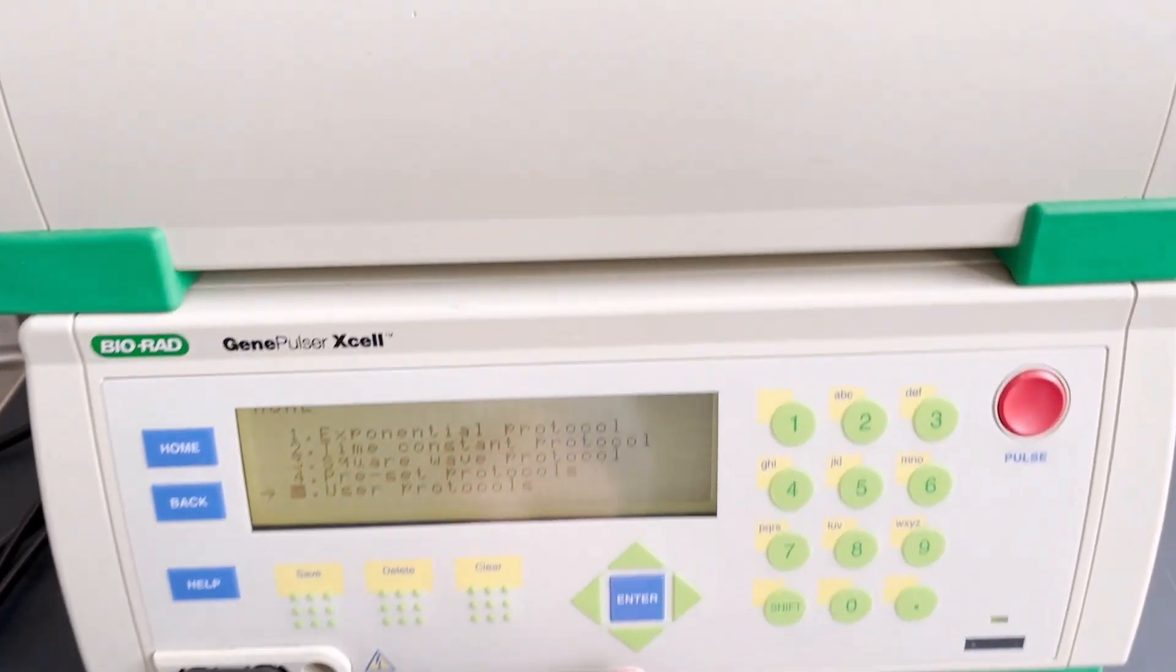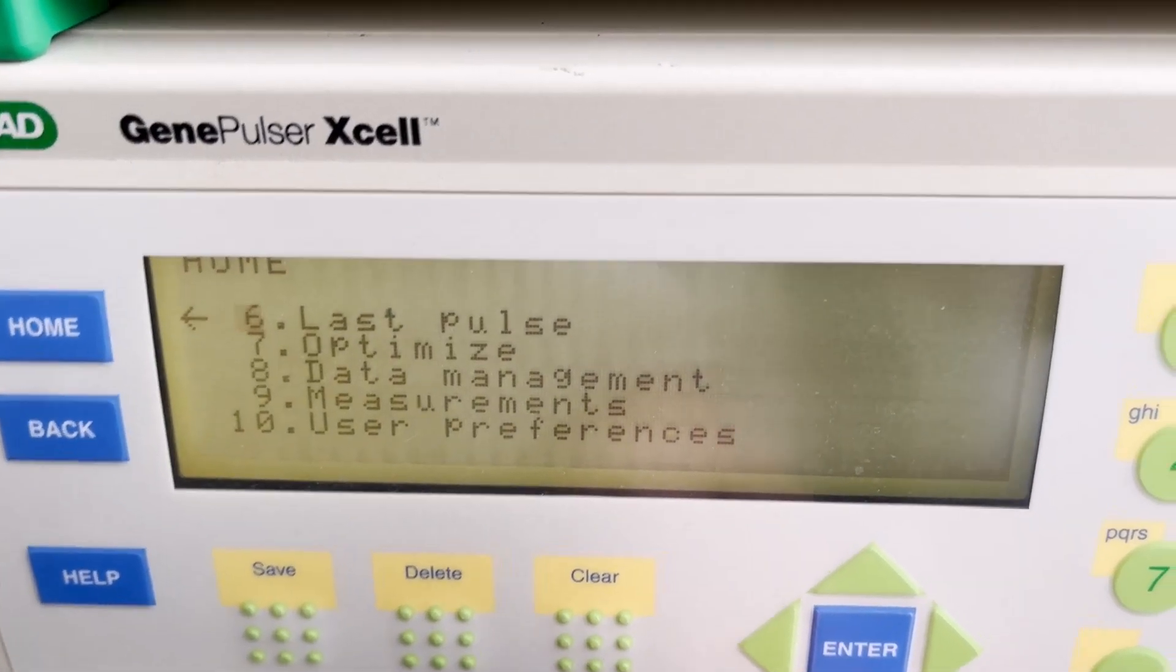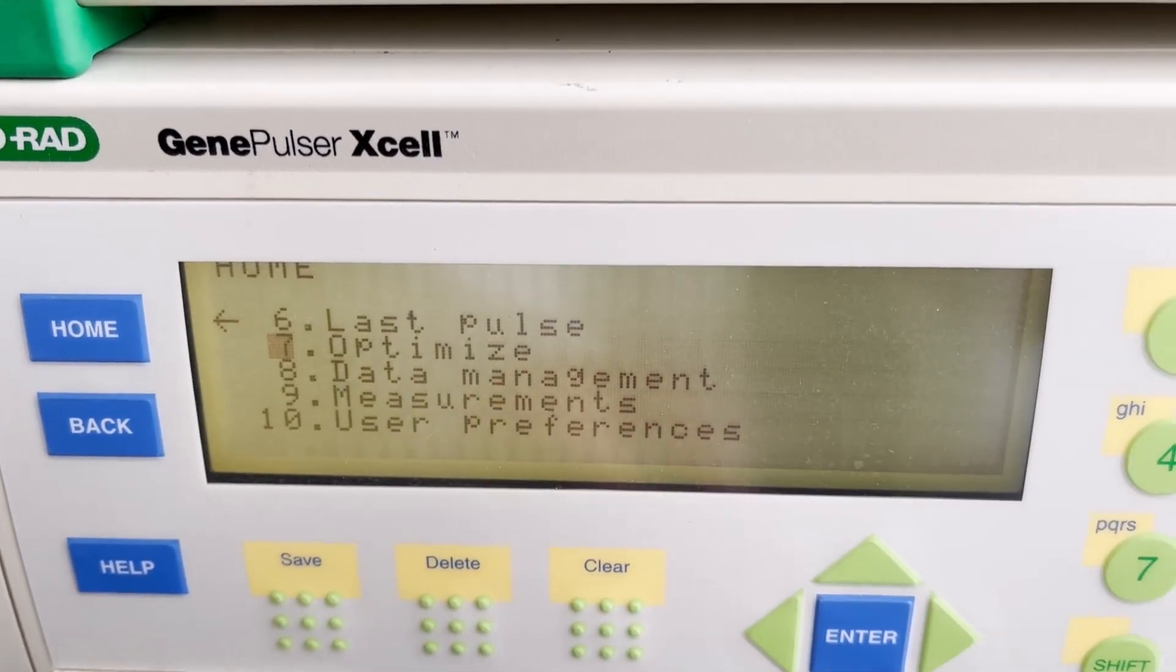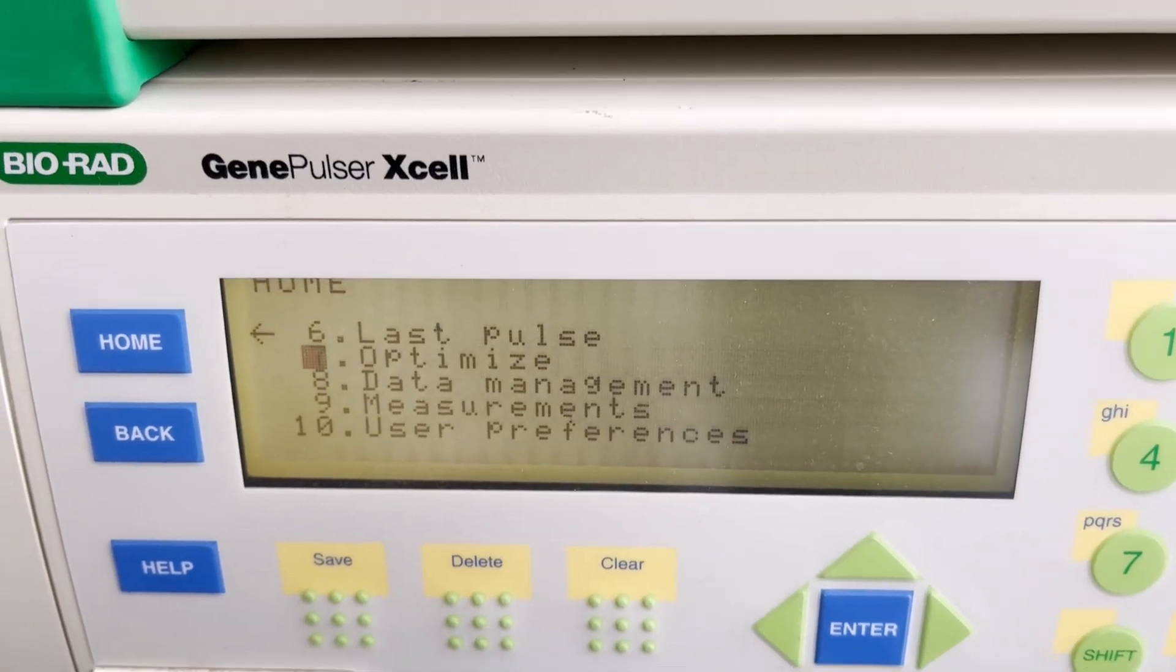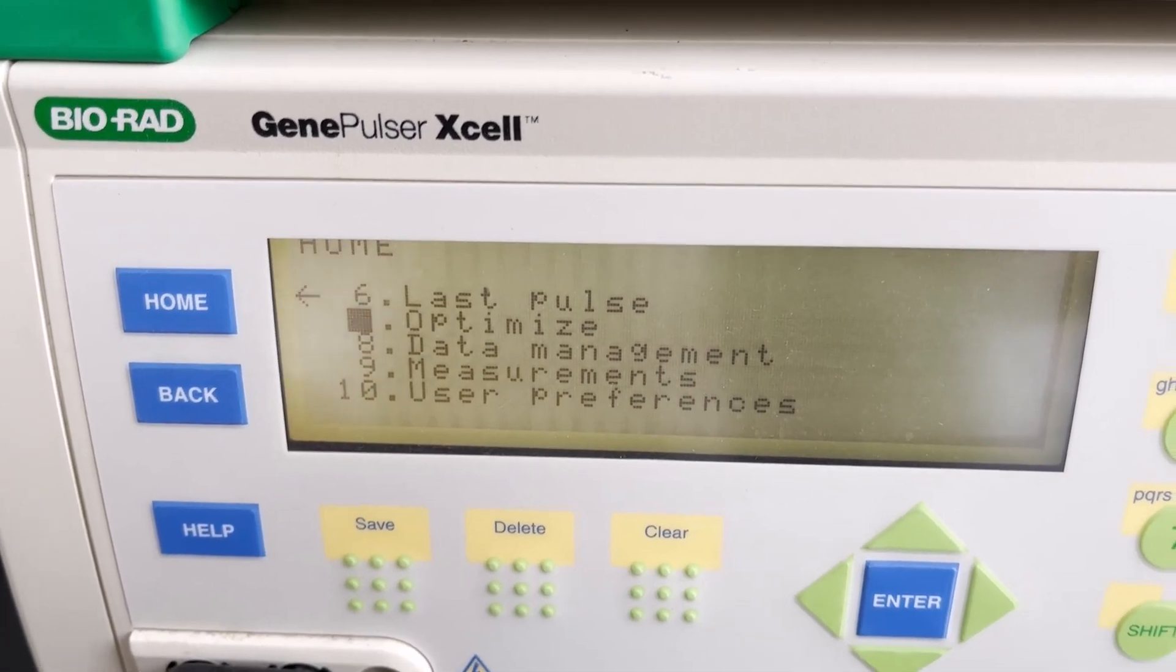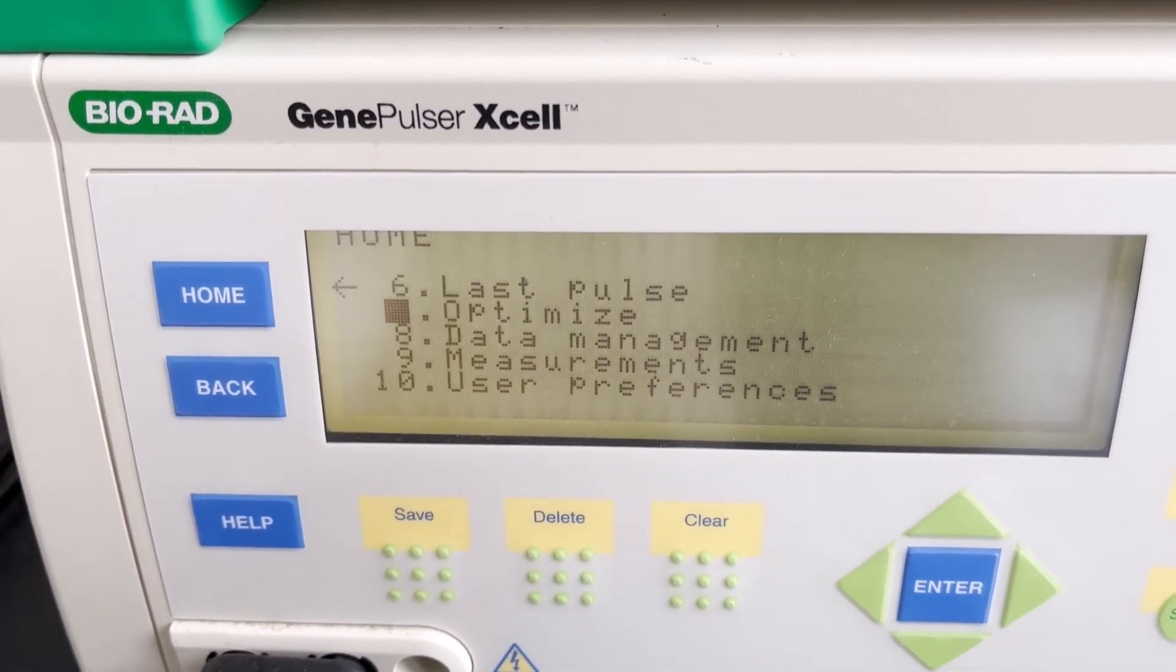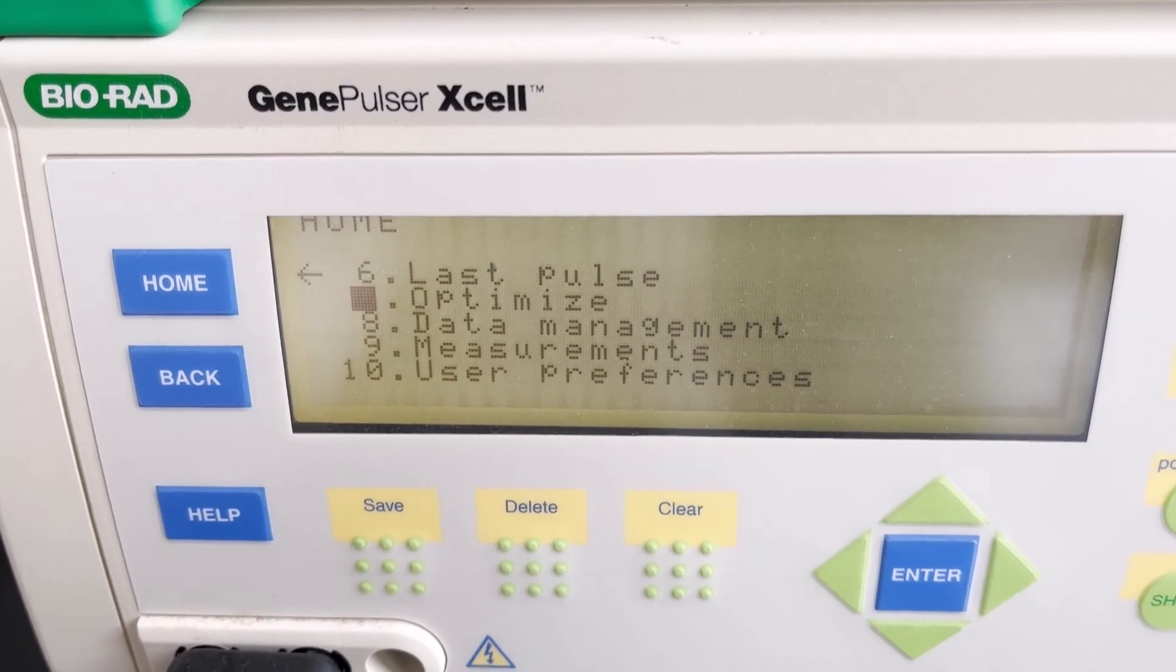One more thing I'll mention is if you scroll down past user protocols there's a couple more options. One of them is optimize, and this setting will allow you to have a protocol that increments by certain voltages if you were trying to optimize a protocol or you had a protocol that required repeating pulses that change as they proceed.